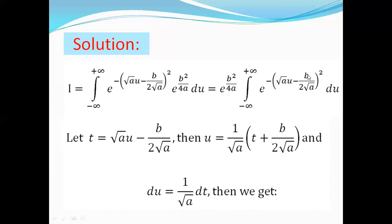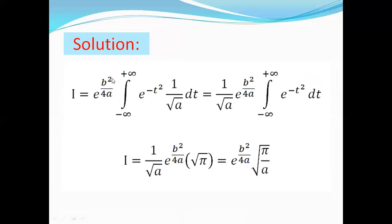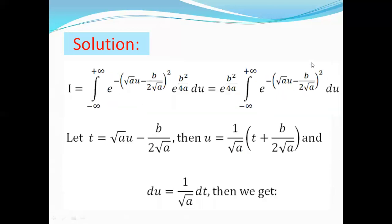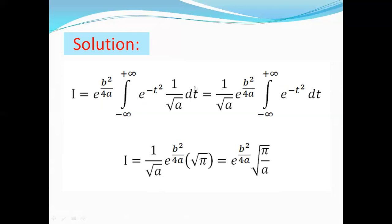Let's now change the variable of integration for the second time. We let t equal √a · u minus b/(2√a). We can simplify to find u: u becomes 1/√a · (t plus b/(2√a)), so du equals 1/√a dt. Substituting, I equals e to the power b²/(4a) multiplied by the integral from minus infinity to plus infinity of e to the power minus t² multiplied by 1/√a dt. Since 1/√a is constant, I equals 1/√a multiplied by e to the power b²/(4a) multiplied by the integral from minus infinity to plus infinity of e to the power minus t² dt.